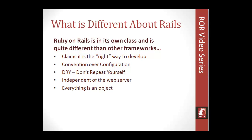Rails runs independent of the web server. You can run Rails on multiple types of servers, like Apache. It actually includes its own web server called WEBrick, so you can run a local Rails server on any computer and you don't need to have WAMP or anything like that. It just runs right on your machine, which is very cool.